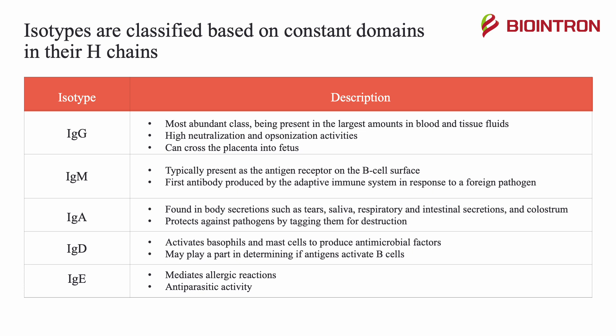IgA is found in body secretions such as tears, saliva, respiratory and intestinal secretions, and colostrum. This protects against pathogens by tagging them for destruction. IgD activates basophils and mast cells to produce antimicrobial factors, and may play a part in determining if antigens activate B-cells. Finally, we have IgE, which mediates allergic reactions and has antiparasitic activity.